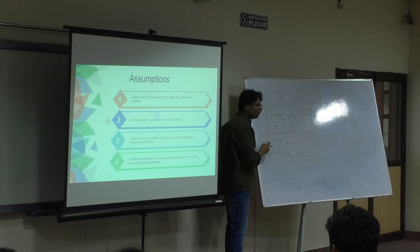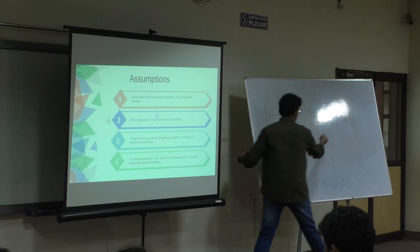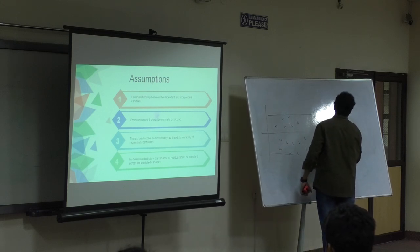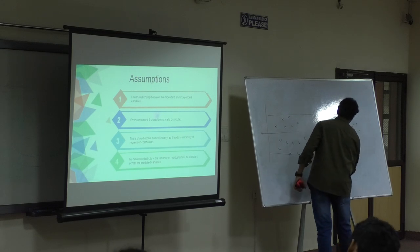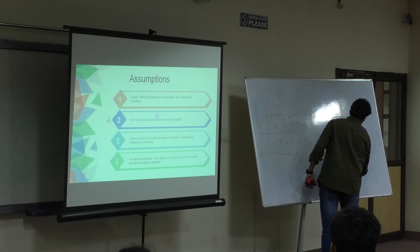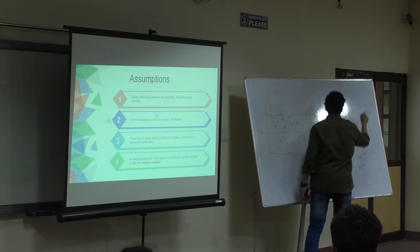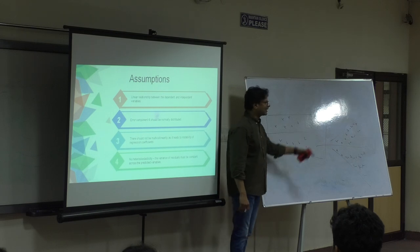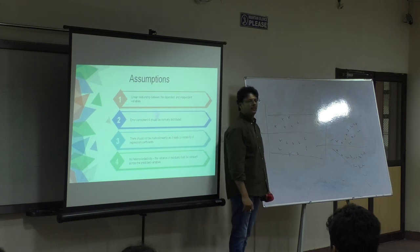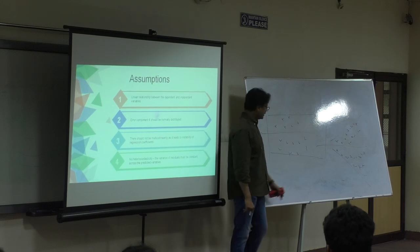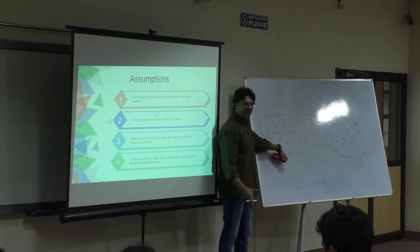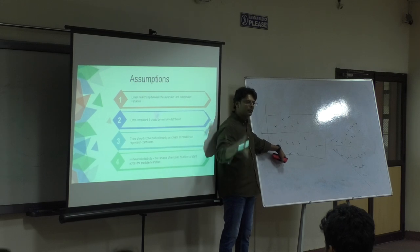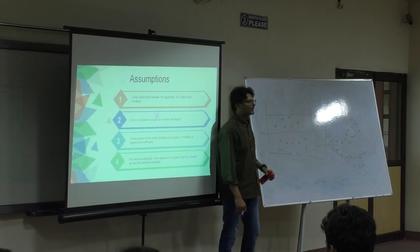So this is homoscedasticity. Heteroscedasticity is something like this. If my scatter plot is like that, if it is heteroscedasticity, this is homoscedasticity, right? My residual data has also to be normally distributed. Clear?